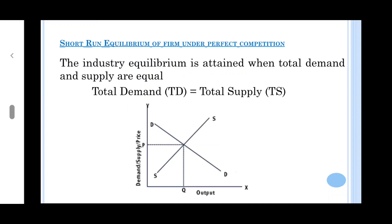Now we will study industry equilibrium. Industry equilibrium is attained when total demand and total supply are equal to each other. Simply, where demand and supply become equal, that will be the equilibrium point, and that will be the equilibrium price and equilibrium output.